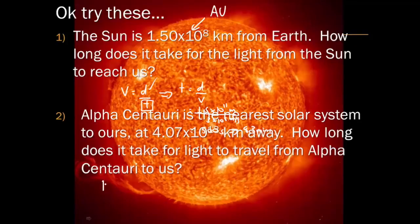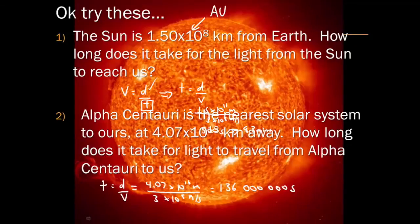We can use the same equation that we did before, and we can plug in our values times 10 to the 16 meters. You're welcome. Divided by 3 times 10 to the 8 meters per second. You end up with 136 million seconds, and what does that convert to? Well, that converts to about 4.3 years. There's a unit that we give to this. We're actually finding out how long does it take light to travel to us.